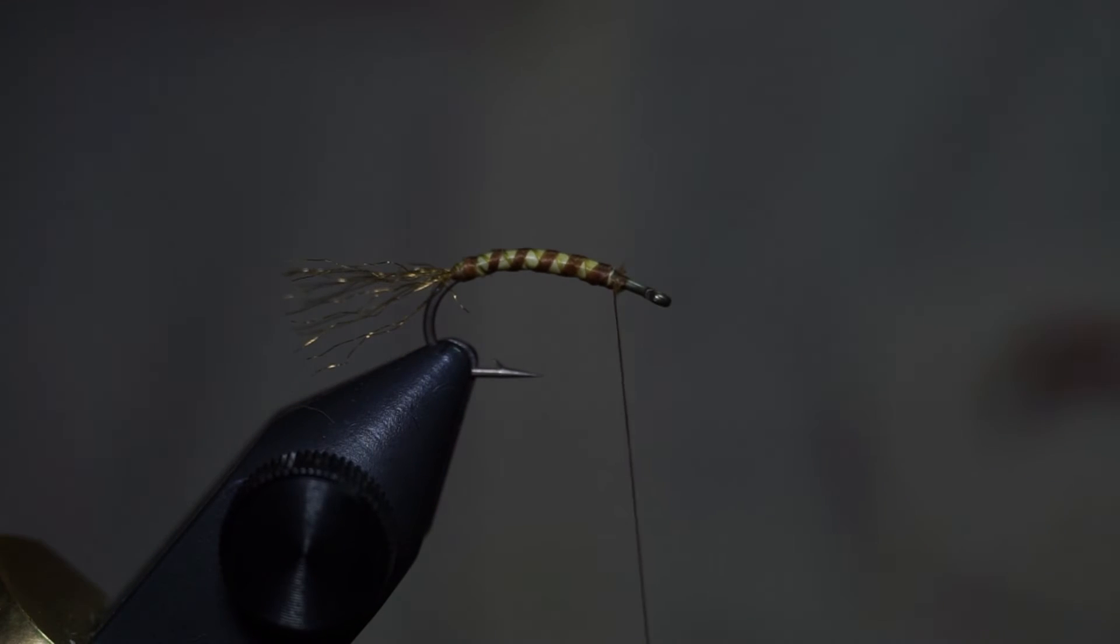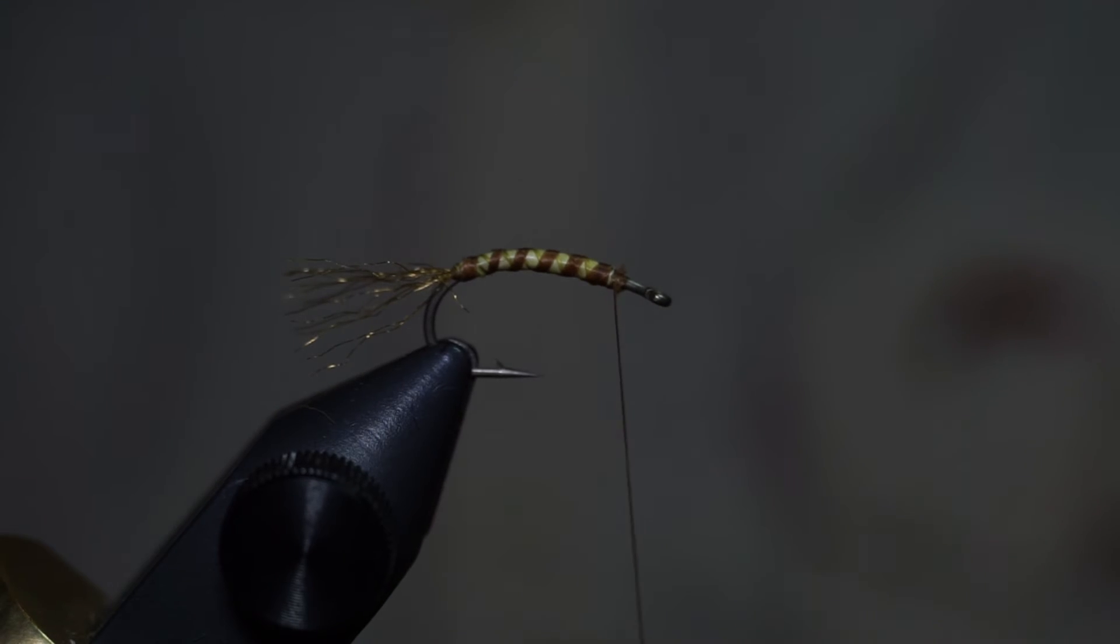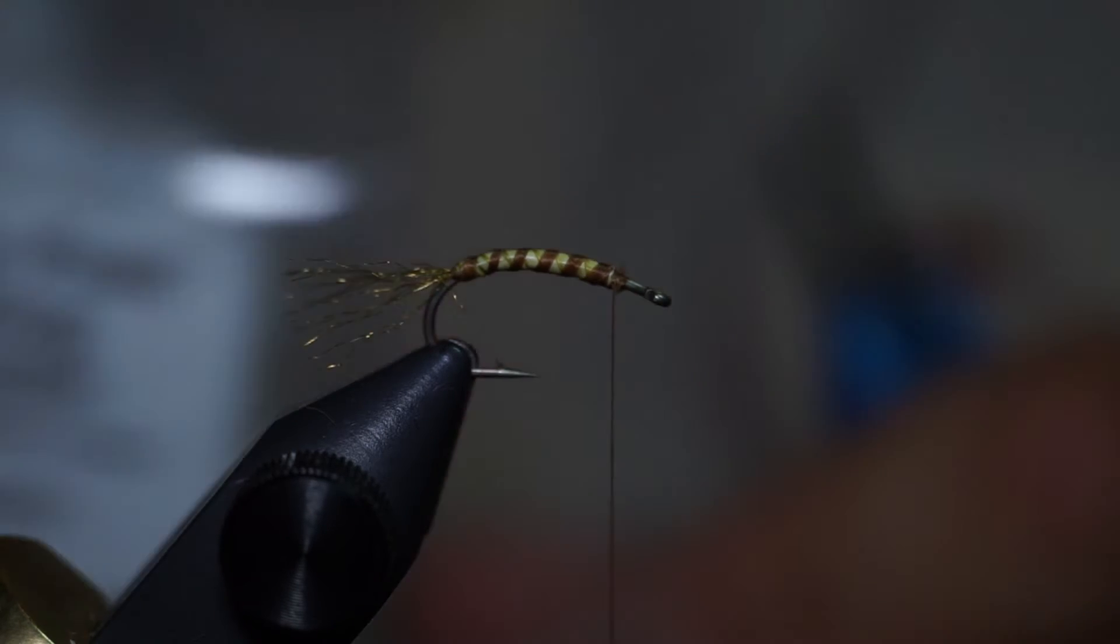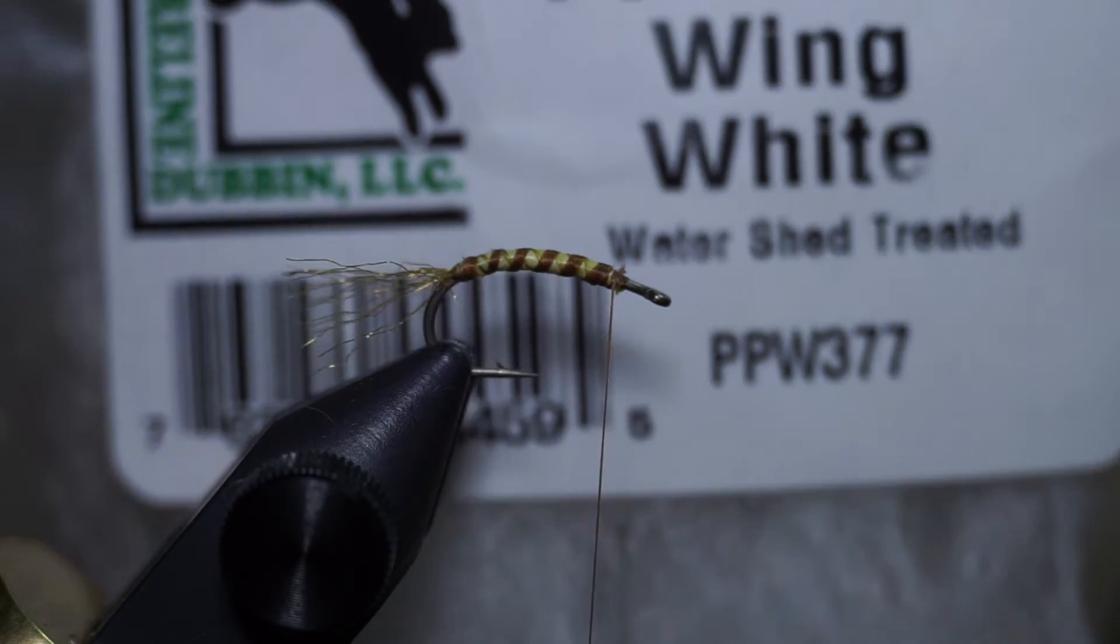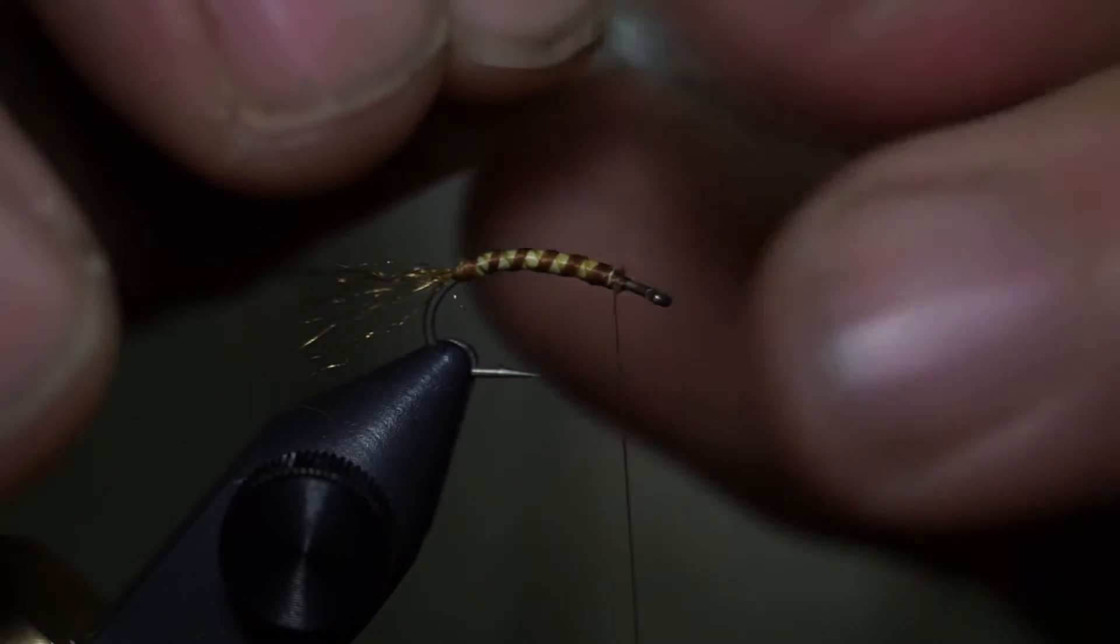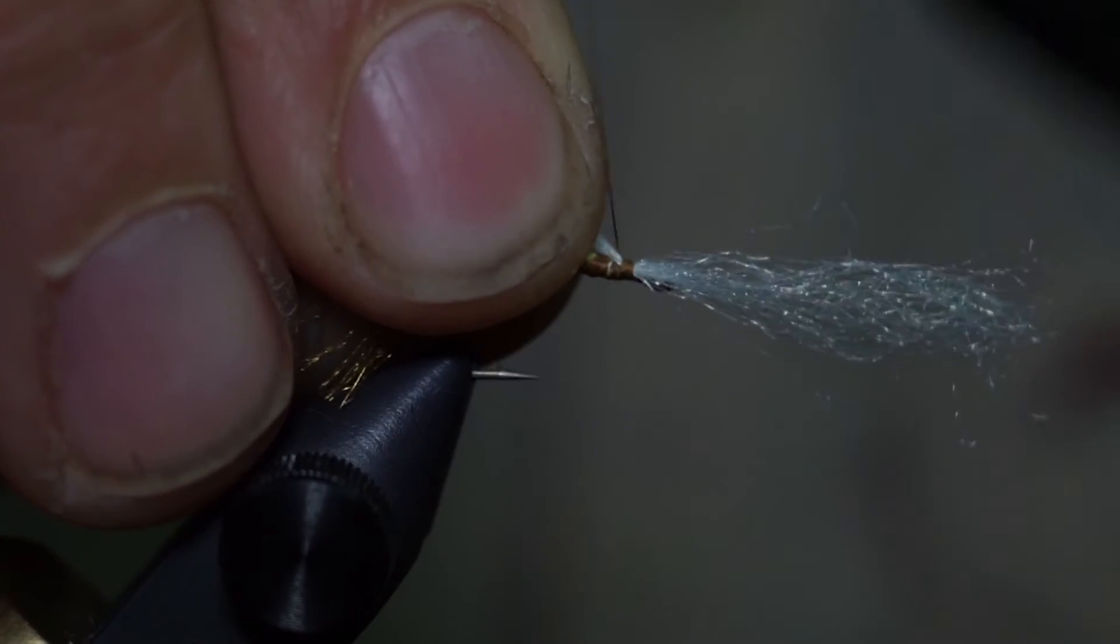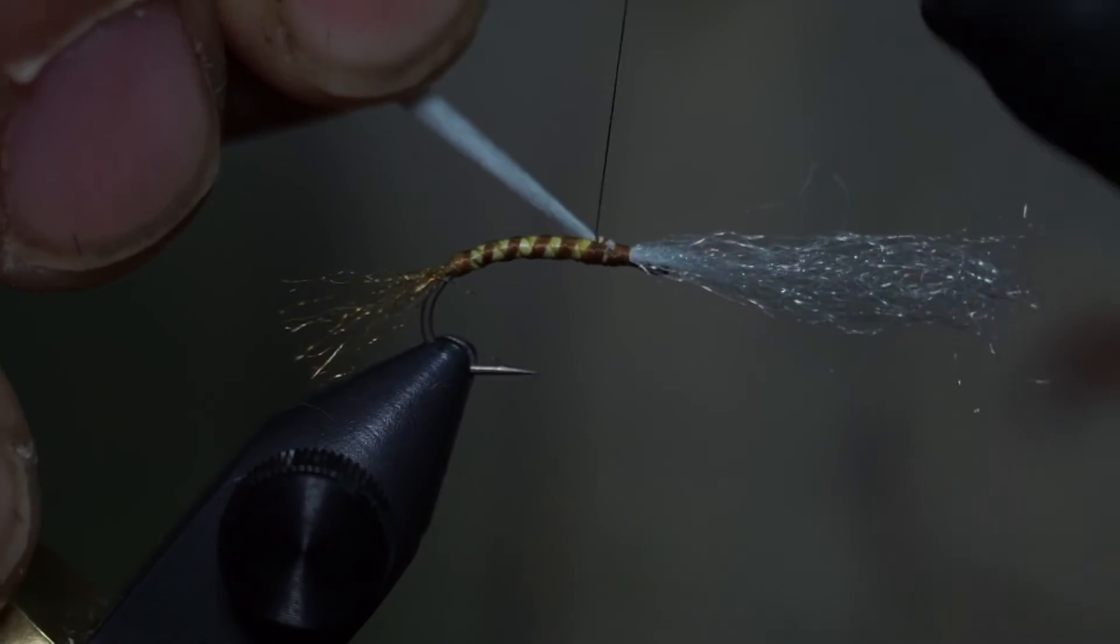Trim off that, and then I will take the hairline parachute post that's been treated with watershed, and I will tie in like so, with a section out the front.